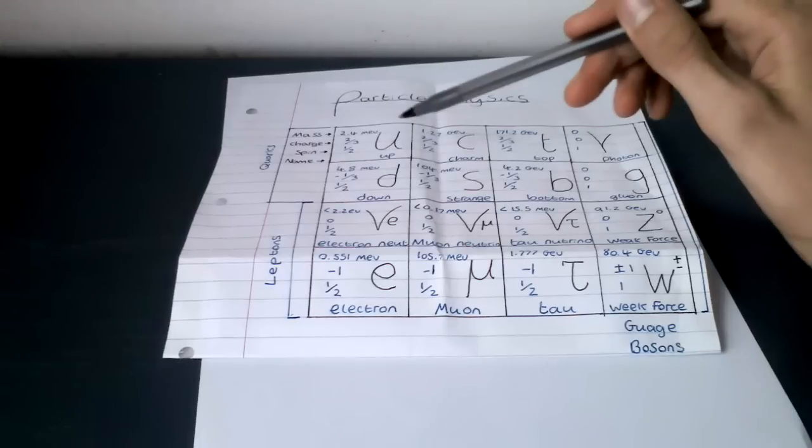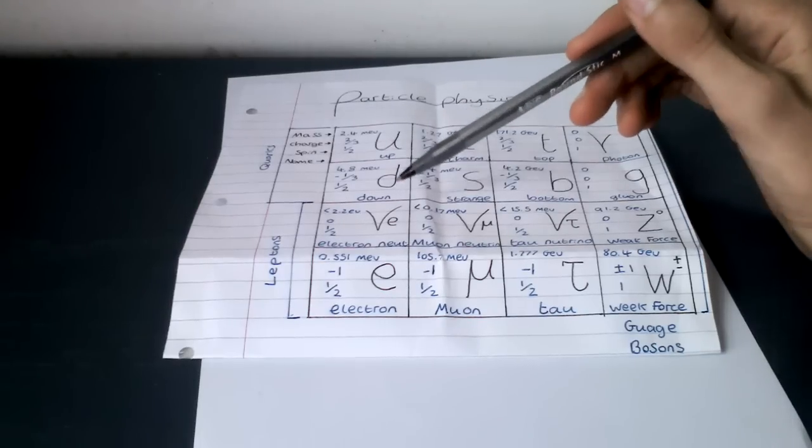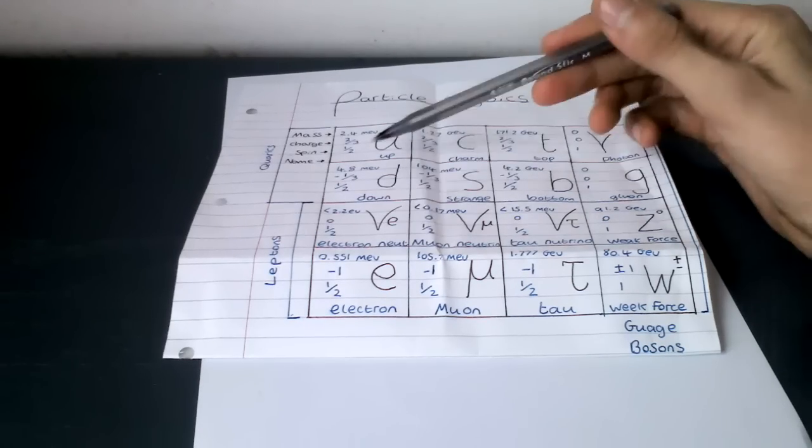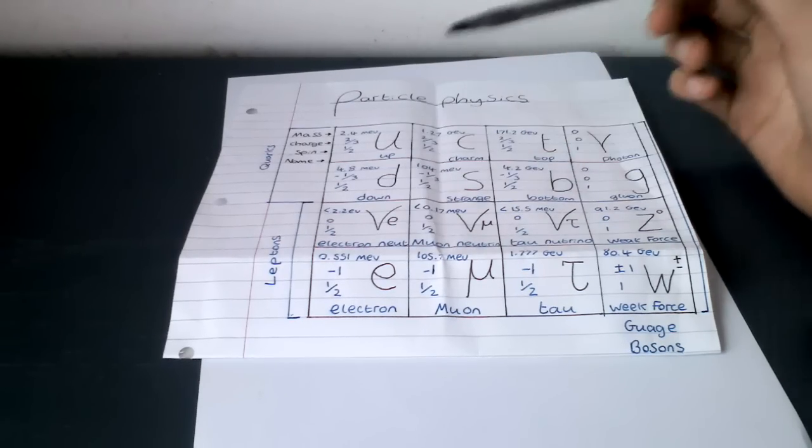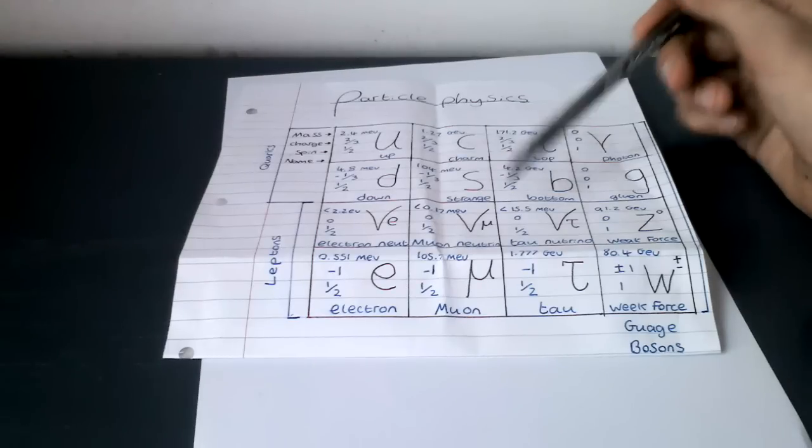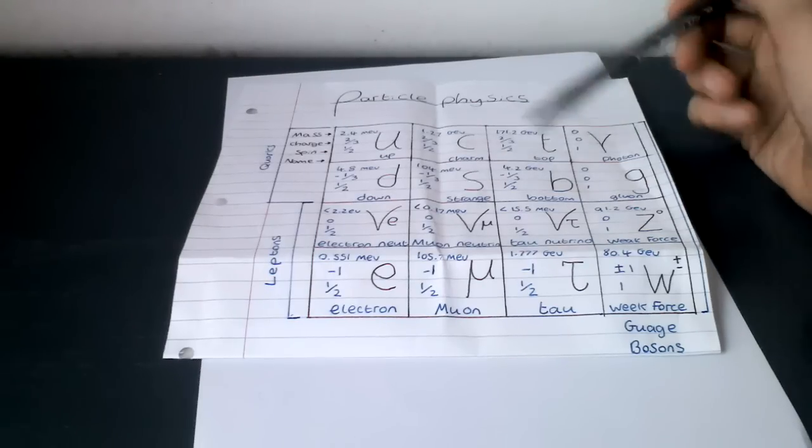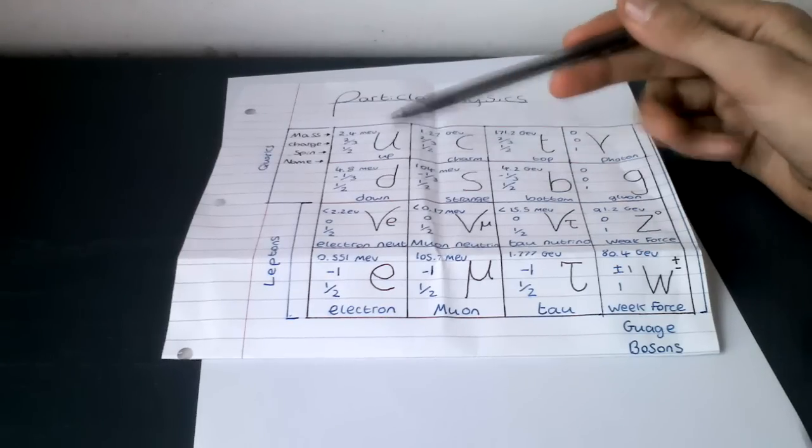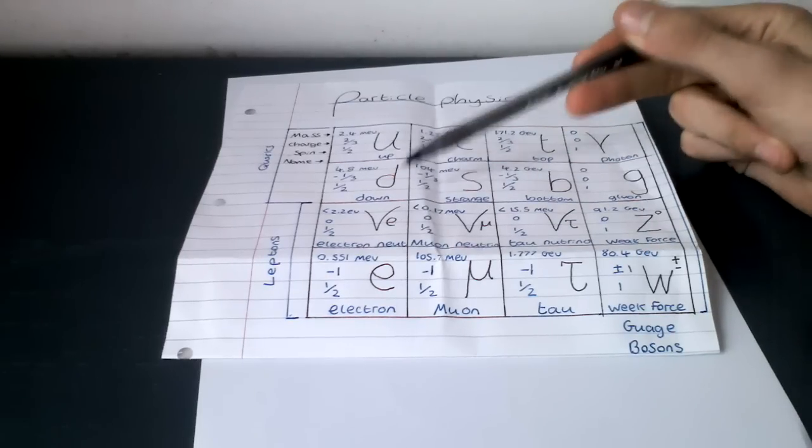Back to quarks. The up and down, the electron neutrino and electron are the 4 stable versions. The other 8 are heavier versions and soon or later decay into these stable ones. That's important.